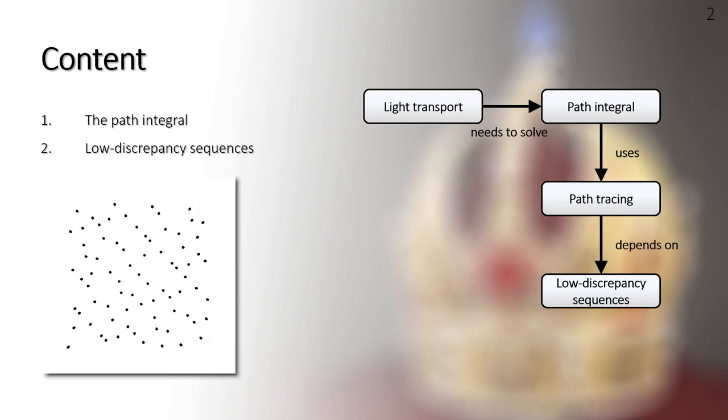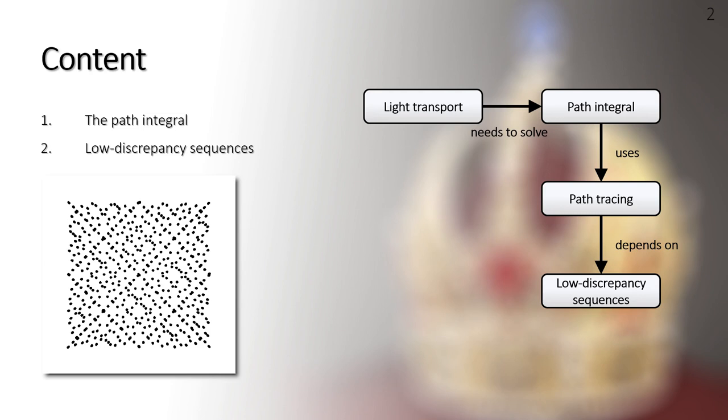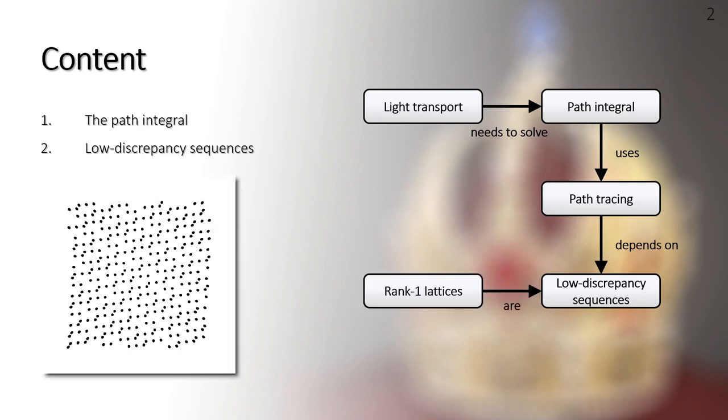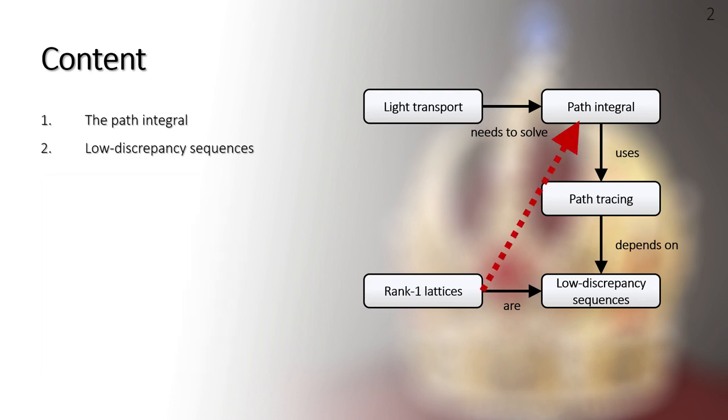Low-discrepancy sequences which are used to generate sample paths for path tracing will be introduced afterwards. We will get to know the rank 1 lattices, one of the low-discrepancy sequences which is not commonly used in rendering. Since traditional rank 1 lattices are not compatible in path integral estimation, we will explain more on this later.